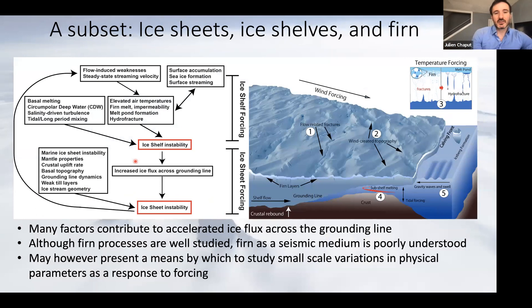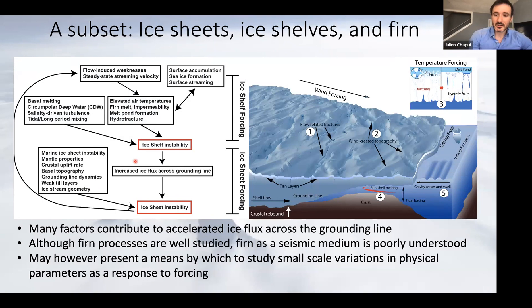What I'm going to talk about today is a subset of all this. I came into this project initially interested in ice shelves, and by proxy ice sheets, and accidentally wandered into the firn. The firn, as most glaciologists will know, is the thick transition layer between snow and ice that occurs on top of these cryospheric media. It can be anywhere from 50 to 130 meters thick, depending on where on the continent you are and what processes and forcings are involved.